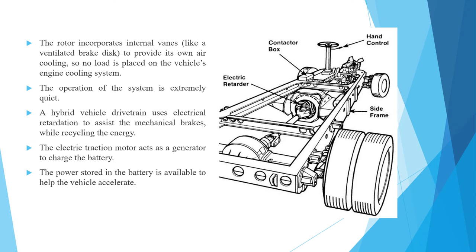This is the electric retarder. As you can see in the picture, this is the chassis of a heavy truck. The steering is here, the engine is placed here, and this is the electric retarder — it's connected to the side frame.